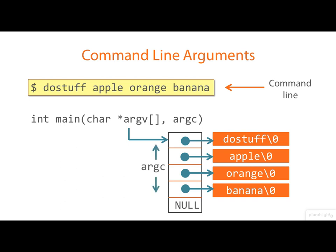The other argument, argc, simply tells us how many arguments there are. Notice that this includes the program's name, which is passed as argv0.